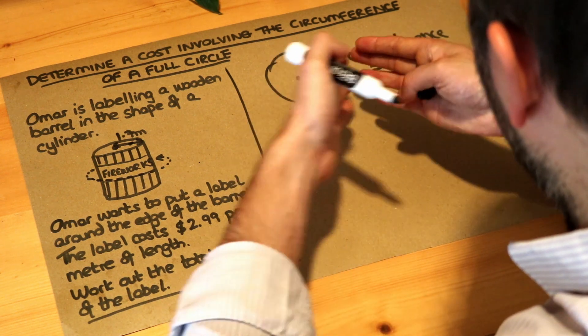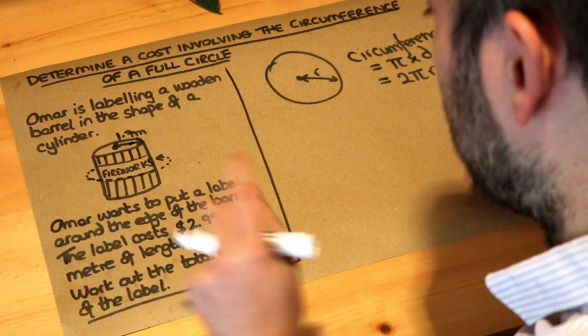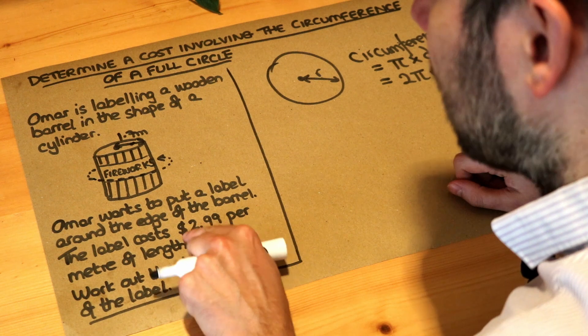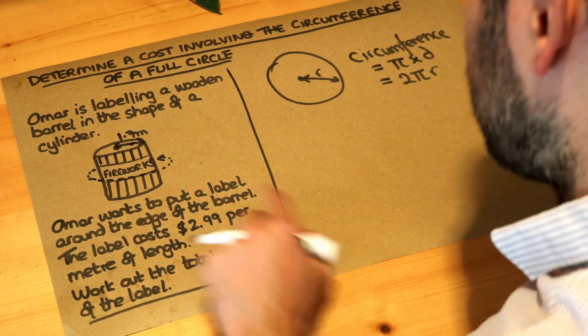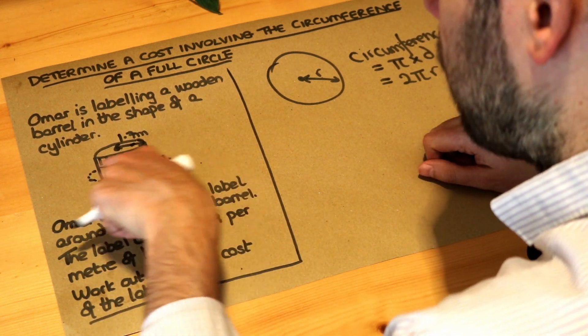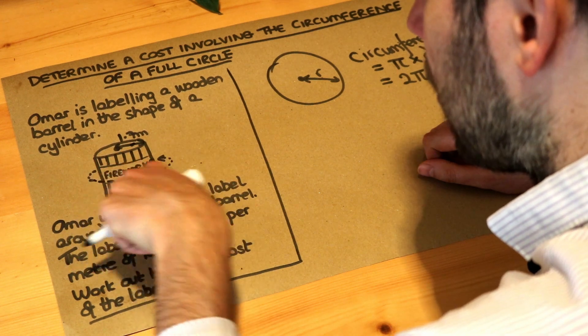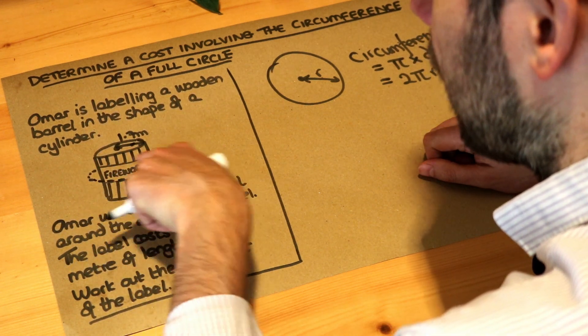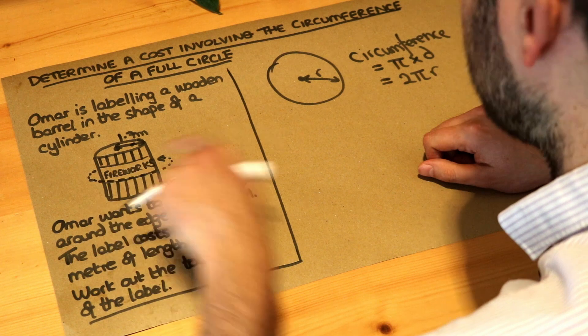Now we firstly need to find the total length of the label because we're being charged per metre of length. To find the length of this label, that would just be the circumference of this circle, the total length around the outside of this circle that goes around the barrel.